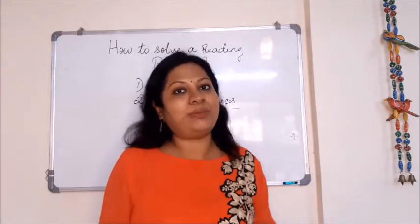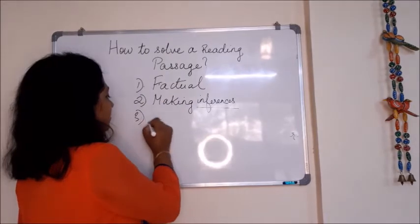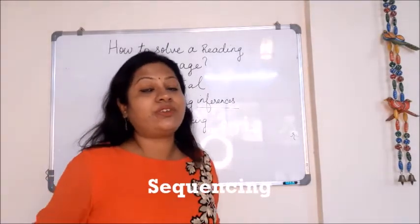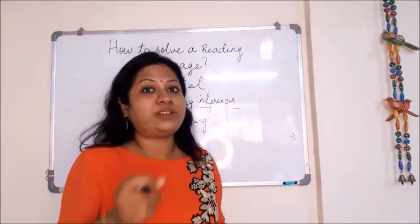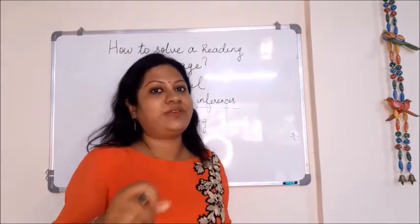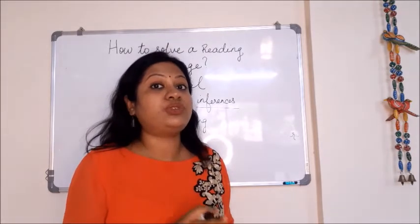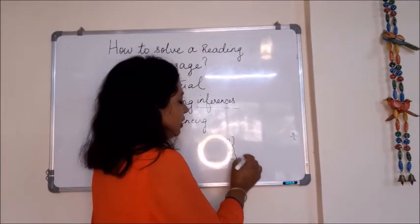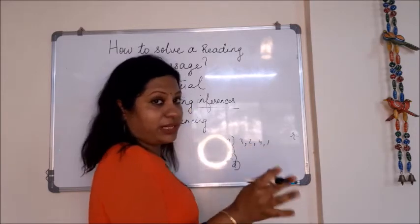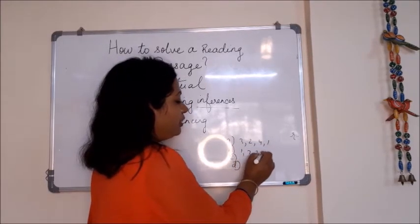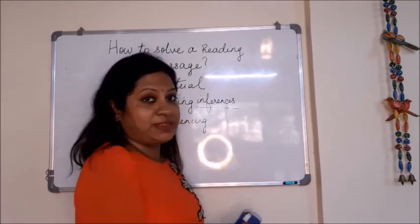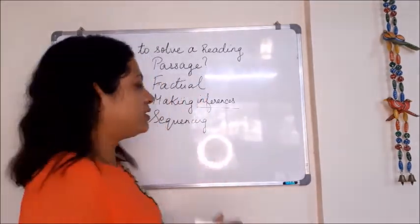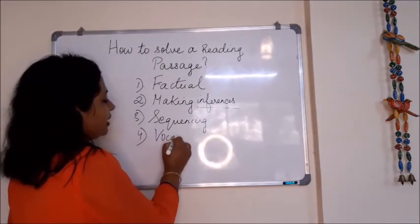The next type is sequencing questions, which are also very common. Sequencing means identifying the order of events which take place in the passage. You may be given four options and asked whether the correct order is, for example, three-two-four-one or one-two-three-four. You need to know which is the correct sequence of events as they occur in the passage. Such questions are known as sequence-based questions.